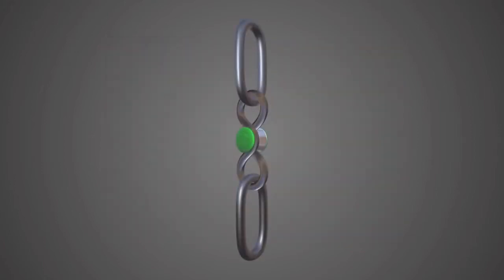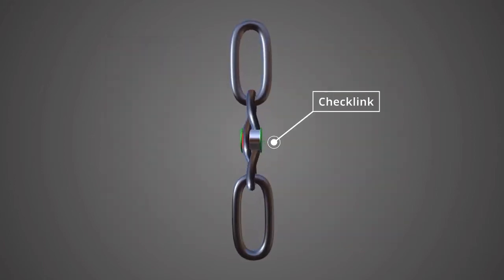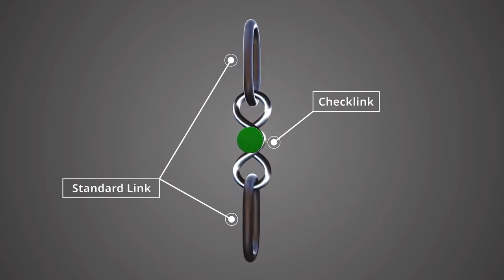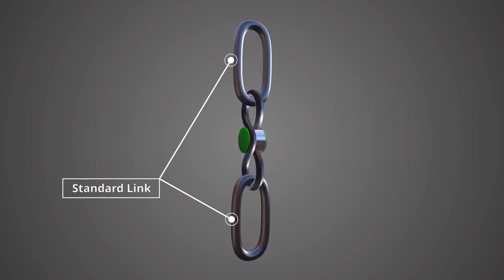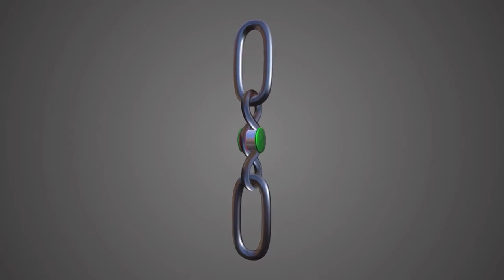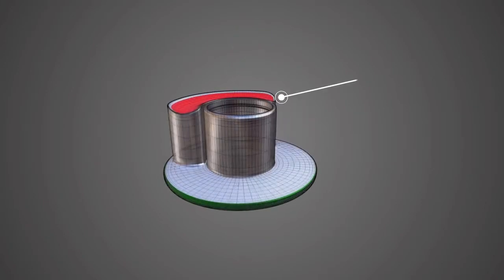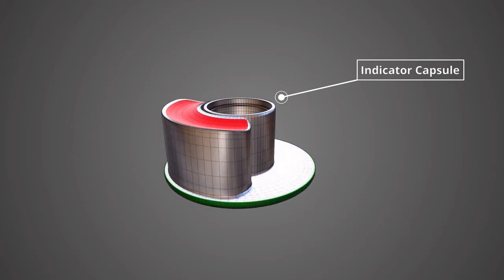The overload check link takes out the guesswork. It's an inline visual indicator that allows the operator or personnel the ability to immediately identify whether the line in use has been overloaded and compromised.